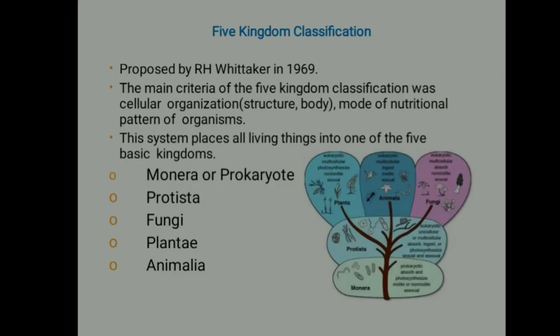The Five Kingdom classification was proposed by R.H. Whittaker in 1969. The main criteria were cellular organization — that is, structure and body mode — and the nutritional pattern of organisms. This system placed all living things into one of five basic kingdoms: Monera or Prokaryote, Protista, Fungi, Plantae, and Animalia.